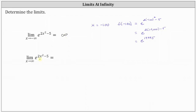For the second limit, x is approaching positive infinity. If x is increasing without bound in the positive direction and we square it, it's going to be an even larger positive value. So once again, the exponent on e is increasing without bound, which means the exponential function values will also increase without bound and approach positive infinity.